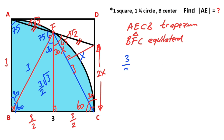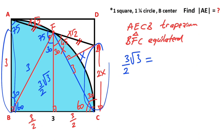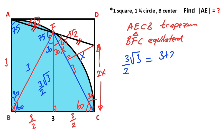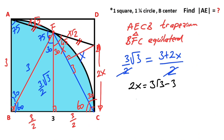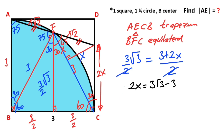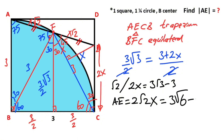So 3 over 2 times root 3 must equal (3 plus 2x) over 2. Therefore, multiplying through the expression: 2x equals 3 root 3 minus 3. The length of AE equals 2 root 2 times x. Multiplying both sides by root 2, the length of AE is 3 root 6 minus 3 root 2.